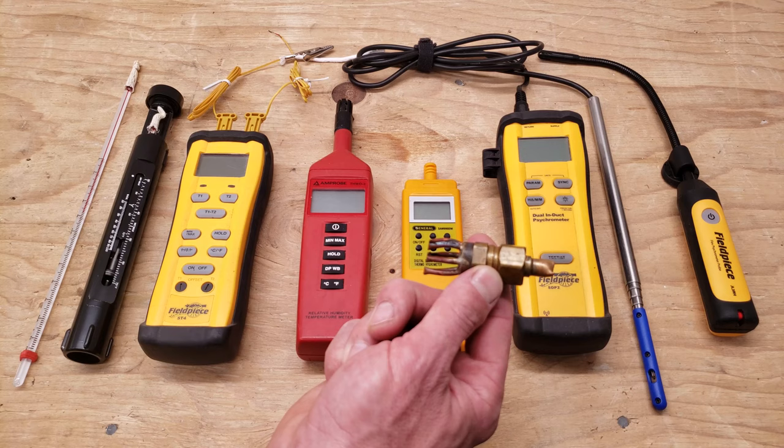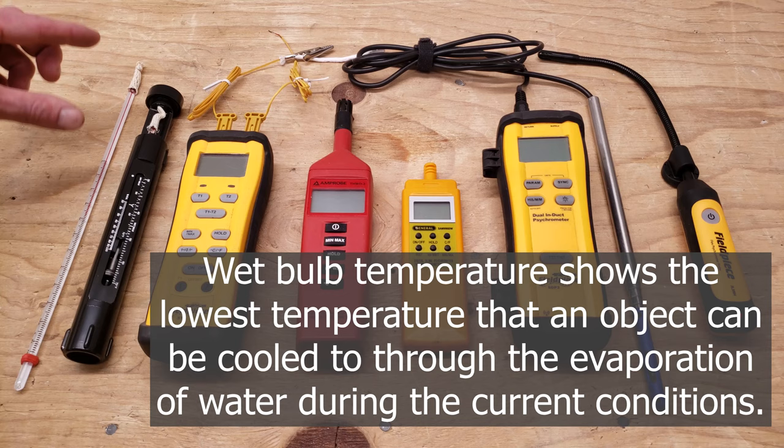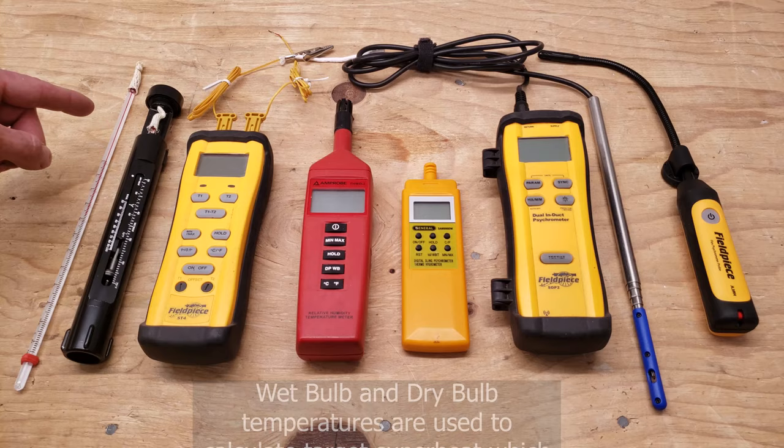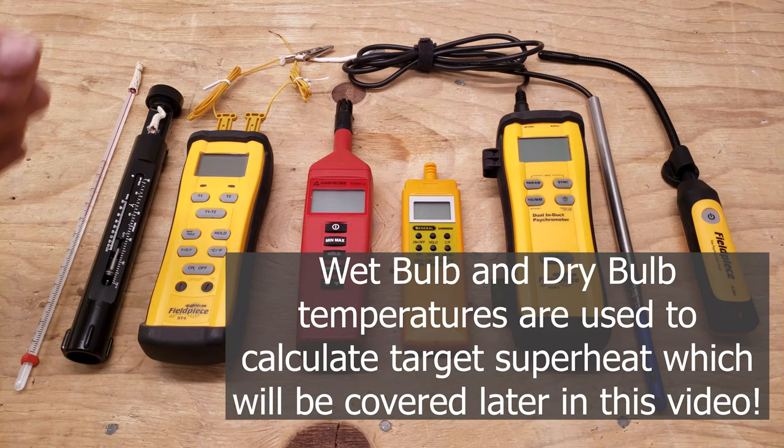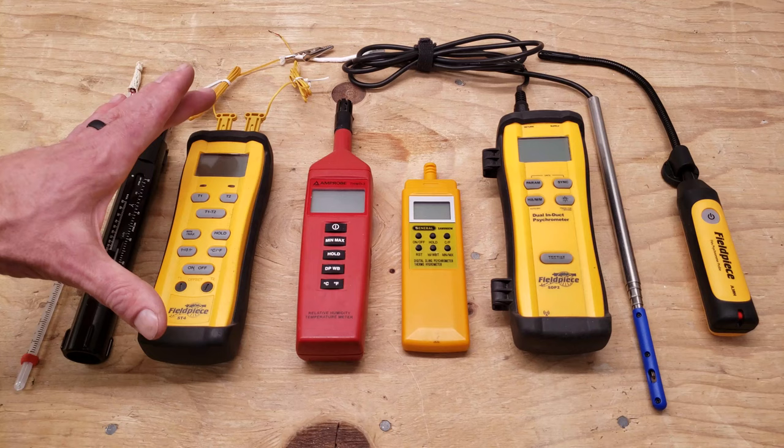To take your wet bulb measurement, you can have a thermometer with a wet sock on the end, and you can put this in front of your return grill where the air is blowing by it or inside of a duct hole. This one right here is a sling psychrometer, and I'll show you that one in a little bit. You're literally swinging it in front of the return grill in order to get your wet bulb temperature.